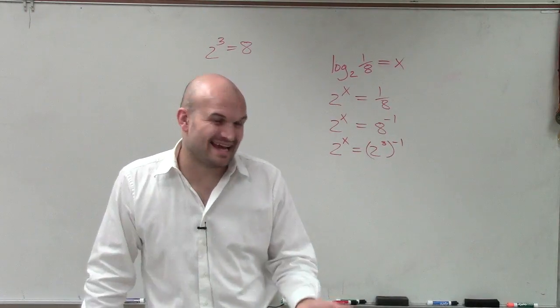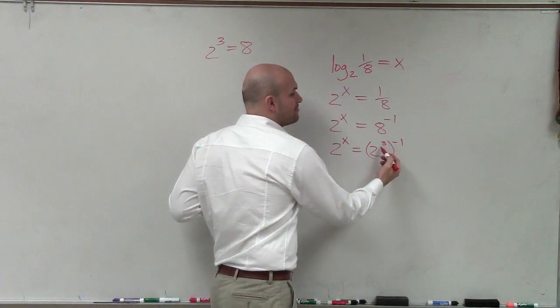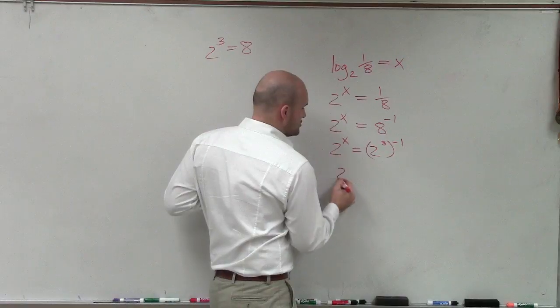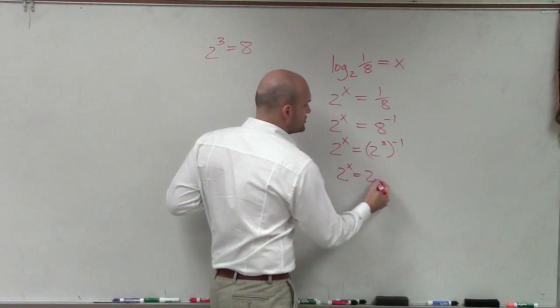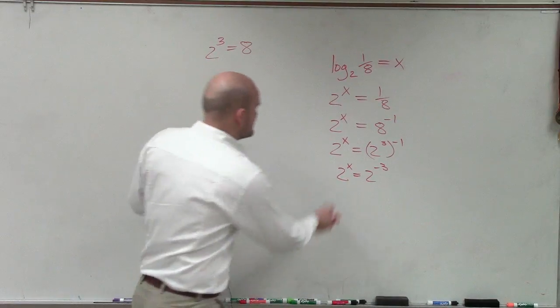So therefore, if I rewrite the 8 as 2 to the third power, I can now apply my power property of exponents. So I can say 2 to the x is equal to 2 to the negative 3. Now I have an exponential equation where the bases are exactly the same.